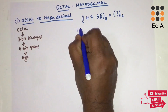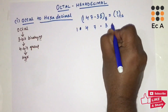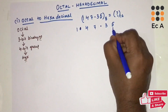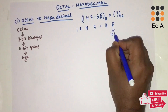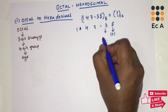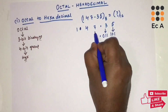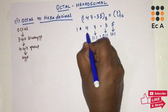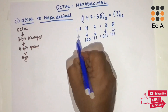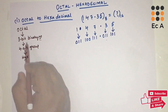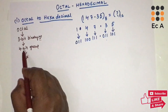Let us take the example: the octal number is 147.35. For digit 5, the binary equivalent is 101; for 3 it is 011; for 7 it is 111; for 4 it is 100; for 1 it is 001. We have now written the 3-bit equivalent binary number for the given octal number.